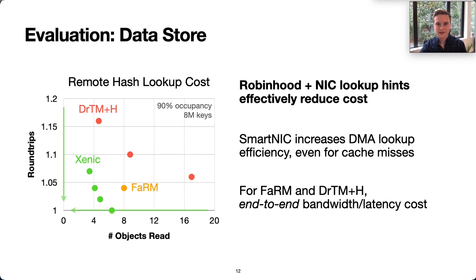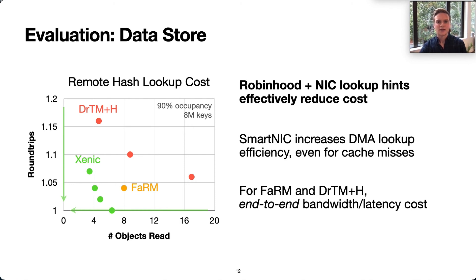To evaluate ZNIC, we first look at the data store. We compare the cost of host memory lookups with that of RDMA designs. This graph shows ZNIC's cost for host lookups when an object is not cached in SmartNIC memory. We compare against FARM's Hopscotch hash table and Dr.TM+H's chained hash table, and find that ZNIC's SmartNIC approach achieves a lower lookup cost in terms of both round trips and objects transferred. The lookup hints in SmartNIC memory effectively limit DMA cost. The RDMA designs transfer multiple objects across the network and incur full end-to-end latency for extra round trips. ZNIC's design has no network overhead, and extra round trips only add PCIe access latency.